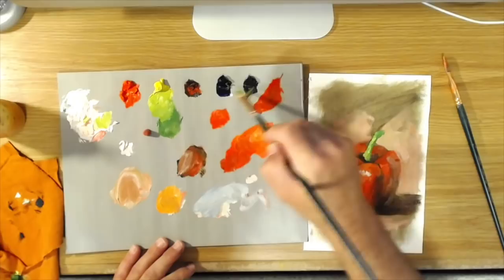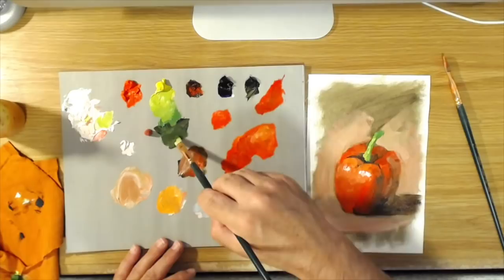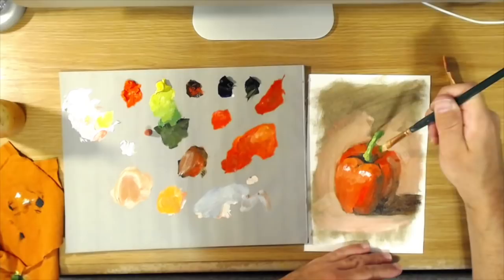I'm just mixing a little black into the green here—it's chromatic black from Gamblin, you can use ivory black if you want—a little bit more of a shadow side on the stem.